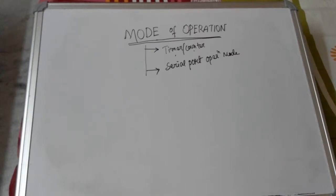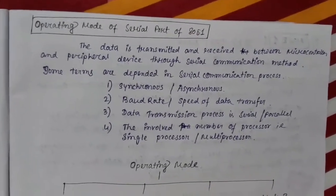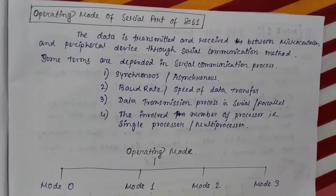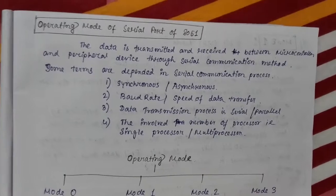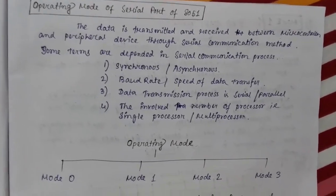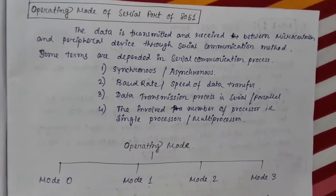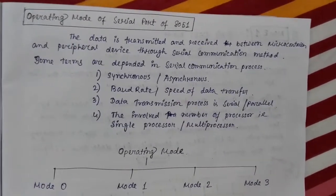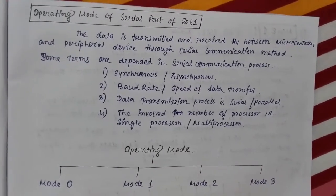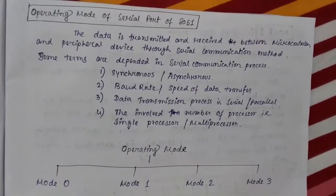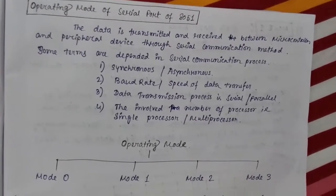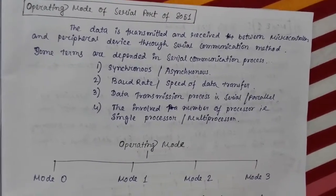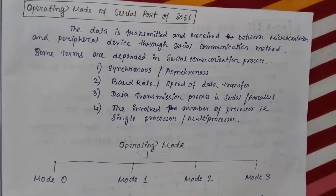The serial port of the 8051 has several characteristics: data is transmitted and received between the microcontroller and a peripheral device via serial communication. This communication may be synchronous or asynchronous. The baud rate, or speed of data transfer, may vary, and the number of processors involved can be single or multiprocessor.